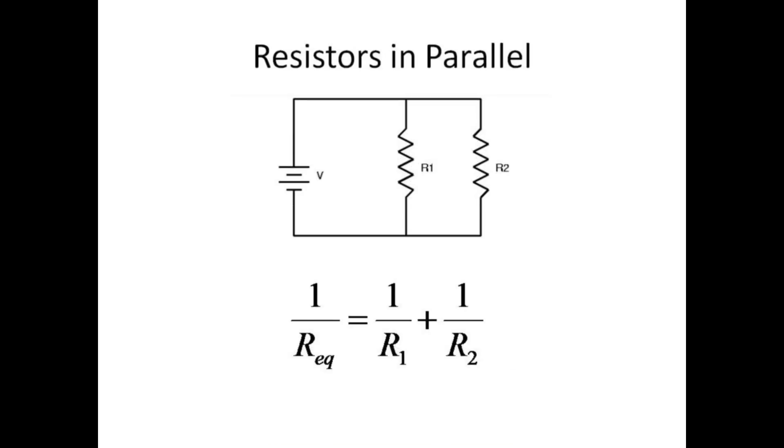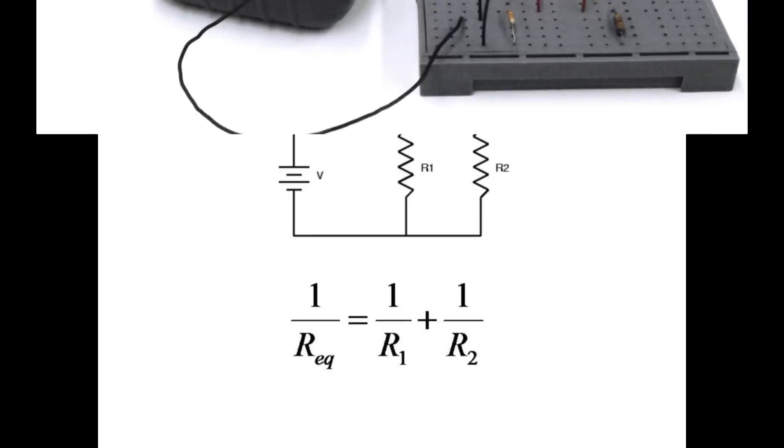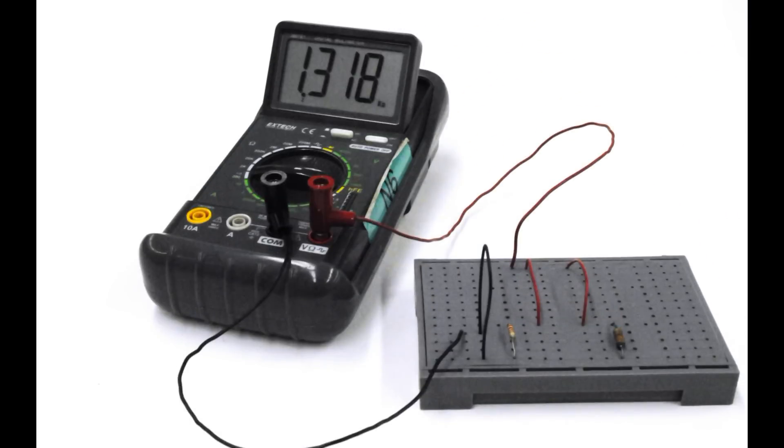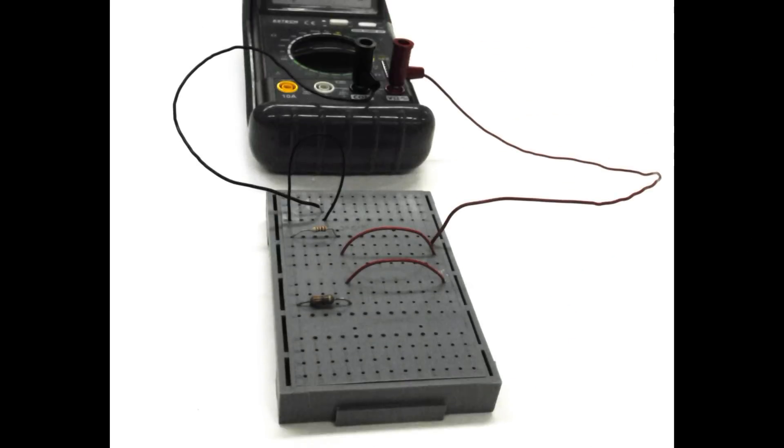For resistors in parallel, we add the inverses to determine the inverse of the equivalent resistance. Here are two resistors placed in parallel. Remember that the rows of holes along the long sides of the circuit board are connected along the entire length. The red and black jumper wires are included here so that later we can measure currents through each branch of the circuit.